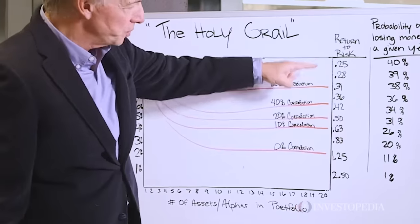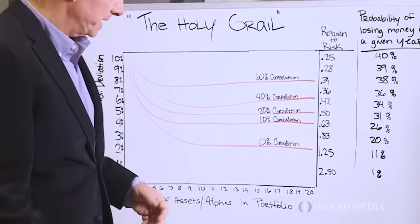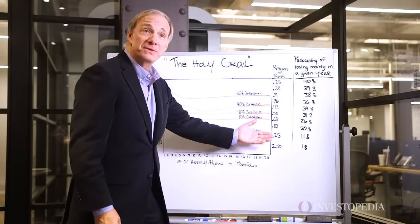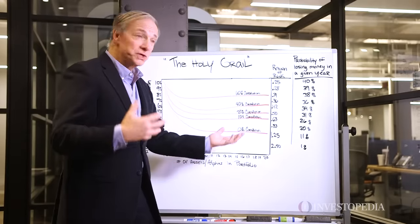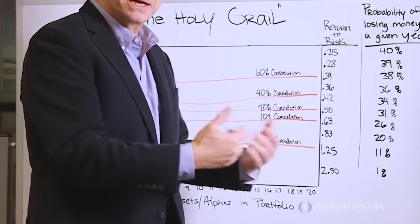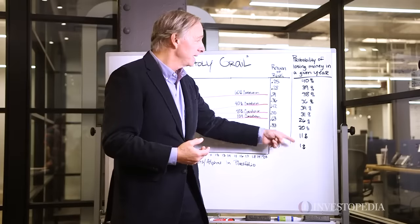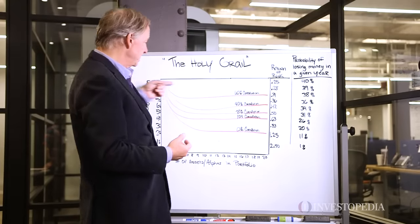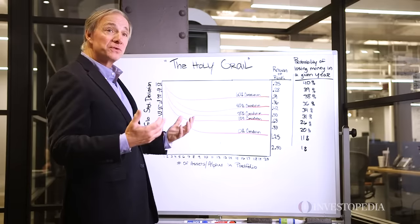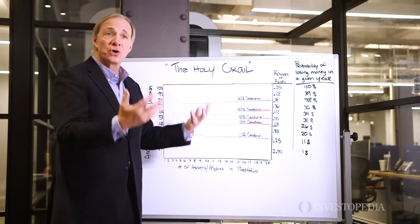This is the return-to-risk ratio that happens for each scenario. If I can get zero correlation and I have 15 to 20 streams, I'll have an information ratio — a return-to-risk ratio — of 1.25. That means my probability of losing money in a year is only 11%, compared to 40% with any single one. That's the power of portfolio construction and the power of diversification.